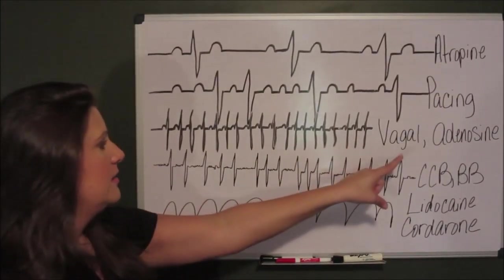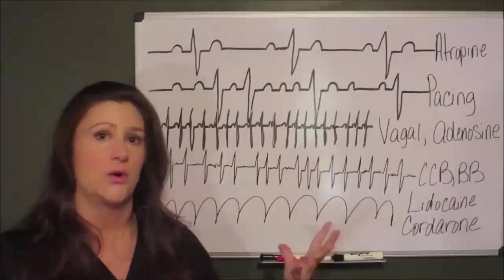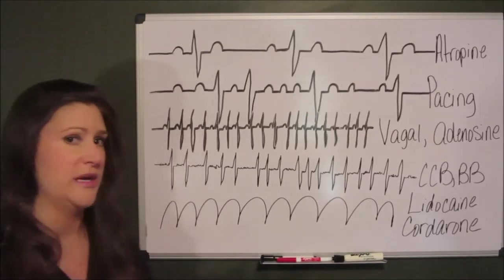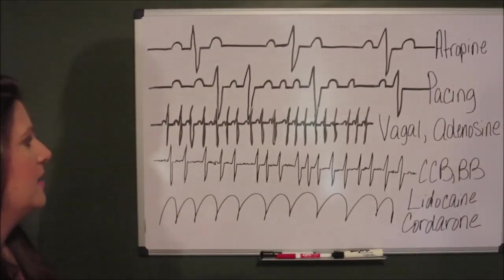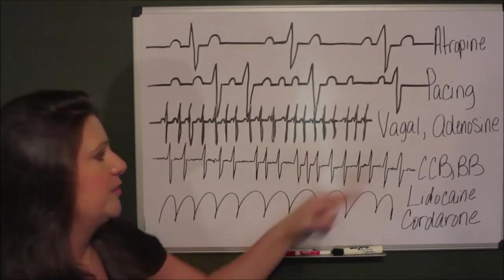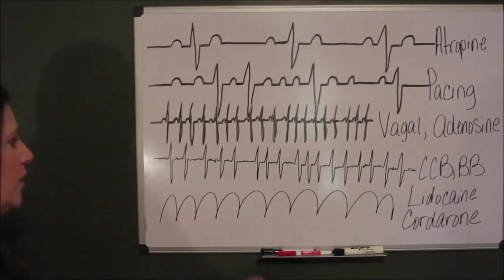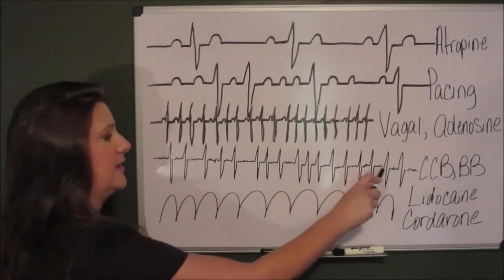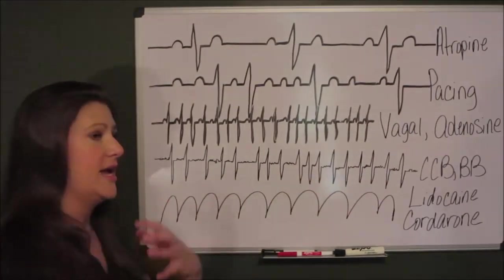So when I talk about unmasking or uncovering the underlying dysrhythmia, we're kind of hoping that when that happens after we push the adenosine, we're going to see something that looks like this. So this is AFib.